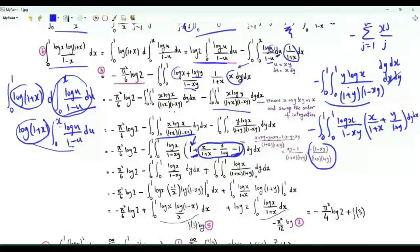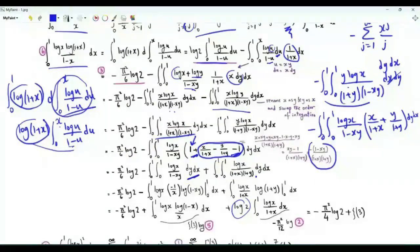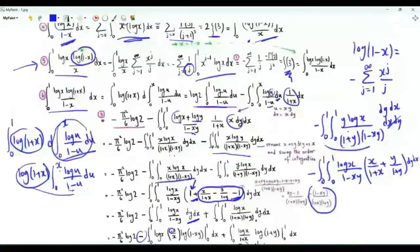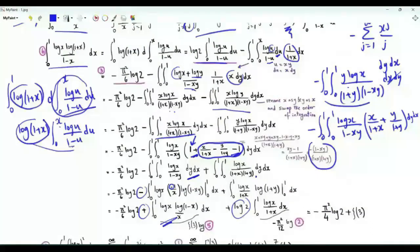Integrating with respect to y: here we have log(1+y); using the limits of integration we get log 2. We are left with the integral from x=0 to 1 of log x/(1+x), which we already obtained as -π²/12. For the other part, integrating with respect to y gives log(1-xy)·(-1/x). Using the limits, we get log(1-x). This integral was obtained in step 5, which is ζ(3). So our result is ζ(3) - π²·log2/12 - π²·log2/6, combining to give -π²·log2/4.